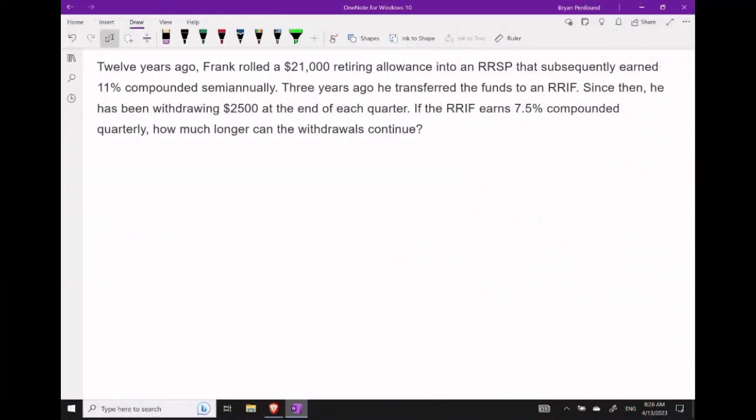12 years ago, Frank rolled $21,000 from a retirement allowance into an RRSP that earned 11% compounded semi-annually. Three years ago he transferred the funds into an RRIF and has been withdrawing $2,500 at the end of every quarter. If the RRIF earns 7.5% compounded quarterly, how much longer can the withdrawals continue?